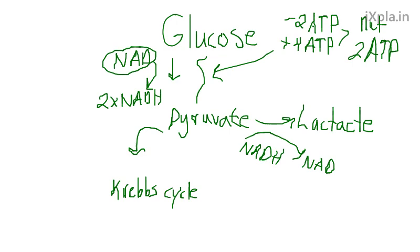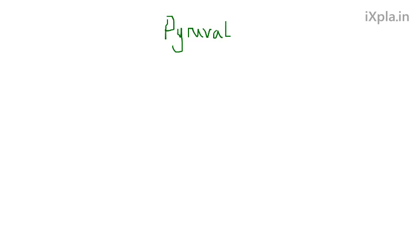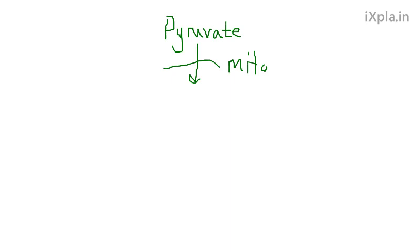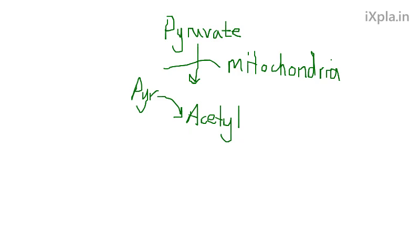If we're running a marathon — long duration, low intensity — we go to aerobic respiration, so we go to the Krebs cycle. What happens is pyruvate goes into the cell's mitochondria, crossing the mitochondrial membrane. The mitochondria is the powerhouse of the cell; this is where all the ATP is made. Inside the mitochondria, pyruvate forms something called acetyl-CoA. When it forms acetyl-CoA, it also gives off one NADH. Since there are two pyruvates, you get two NADHs, because everything happens twice.